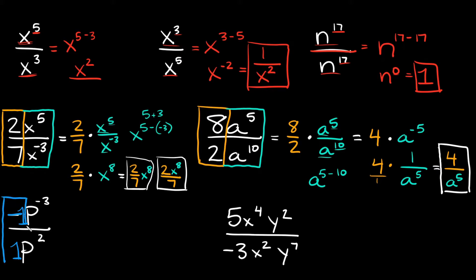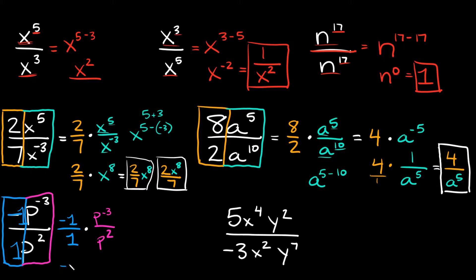So you can separate your numbers from your variables: the p to the negative 3 over p squared. So if we multiply this out, we're going to have negative 1 over positive 1, and then multiply that by our variables — p to the negative 3 over p squared. So negative 1 divided by positive 1 is just negative 1. Then we have the same base — a p here and a p here — so just keep the p and subtract your exponents. Negative 3 is on top, so we write that first: negative 3 minus the bottom one, which is 2. And negative 3 minus 2 is negative 5. So this is going to be equal to negative 1 times p to the negative 5.